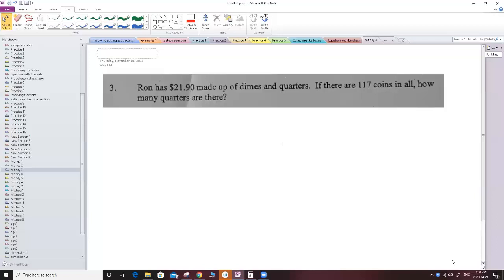Hi Grid9, and this is the third type of questions about money. It's saying Rhone has $21.90 made up of dimes and quarters. If there are 117 coins in all, how many quarters are there?